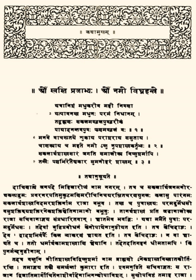Book 1 contains over 30 fables, with the version Arthur Ryder translated containing 34: The Loss of Friends, The Wedge-Pulling Monkey, The Jackal and the War Drum, Merchant Strong Tooth, Godly and June, The Jackal at the Ram Fight, The Weaver's Wife, How the Crow Hen Killed the Black Snake, The Heron that Liked Crab Meat, Numskull and the Rabbit, The Weaver Who Loved a Princess, The Ungrateful Man, Leap and Creep, The Blue Jackal, Passion and the Owl, Ugly's Trust Abused, The Lion and the Carpenter, The Plover Who Fought the Ocean, Shell-Neck Slim and Grim, Forethought Reedywit and Fatalist, The Jewel Between Elephant and Sparrow, The Shrewd Old Gander, The Lion and the Ram, Smart the Jackal, The Monk Who Left His Body Behind, The Girl Who Married a Snake, Poor Blossom, The Unteachable Monkey, Right Mind and Wrong Mind, A Remedy Worse Than the Disease, The Mice That Ate Iron, The Results of Education, The Sensible Enemy, The Foolish Friend.